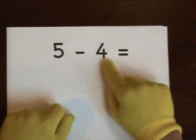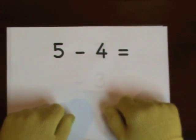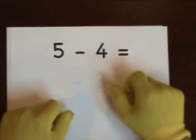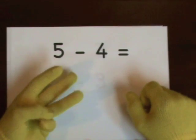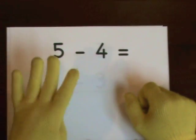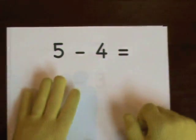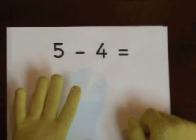Start at 5. Do 4 on our fingers. 1, 2, 3, 4. That's how many we'll take away. 5, 4, 3, 2, 1.